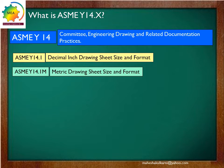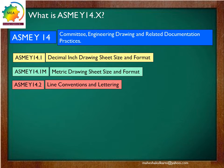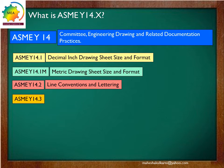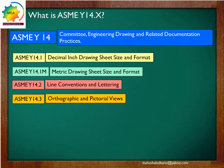The next important standard is ASME Y14.2 — this subcommittee deals with line conventions and lettering. The fourth standard is ASME Y14.3 — this subcommittee deals with orthographic and pictorial views: how orthographic views need to be represented, how pictorial views need to be represented. All these details are covered in this standard.